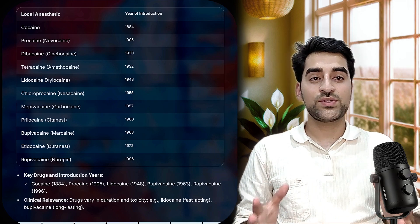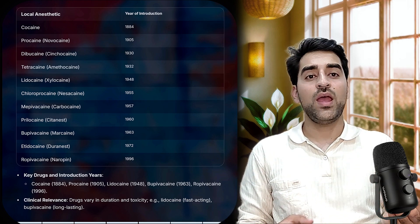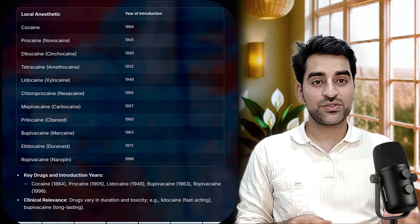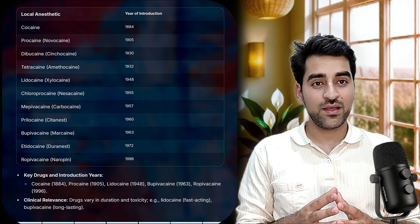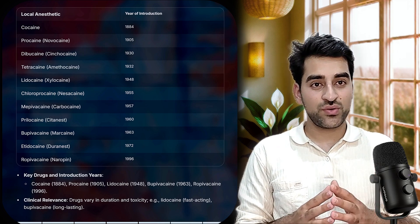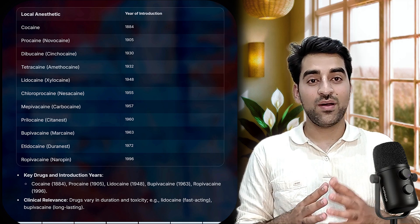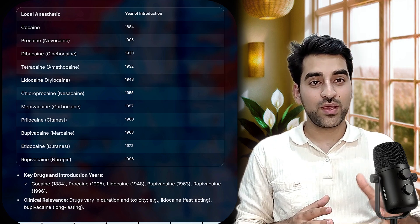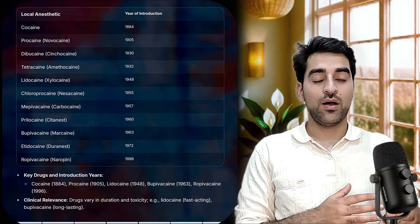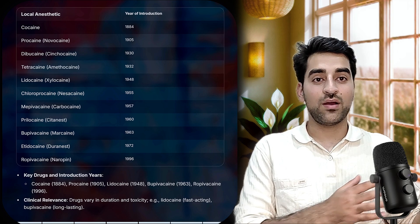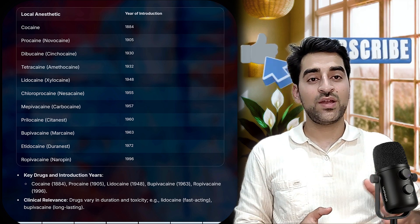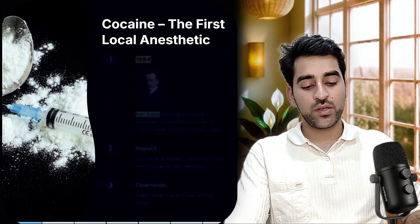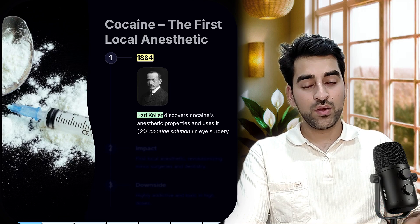Based on their profiles, we choose different anesthetics for different scenarios. For a minor or dental surgery, we use lidocaine due to its shorter duration. For a longer procedure or surgery, we use bupivacaine. Now let's talk about our first local anesthetic: cocaine.